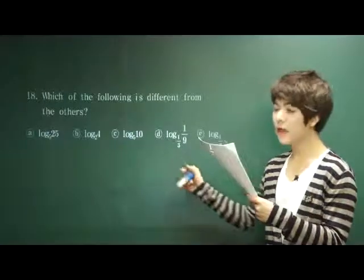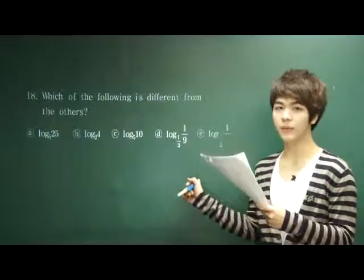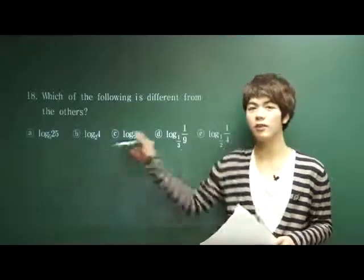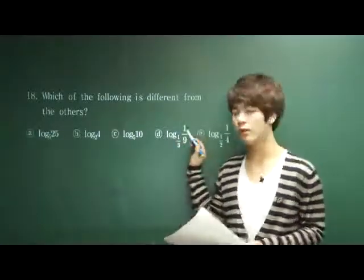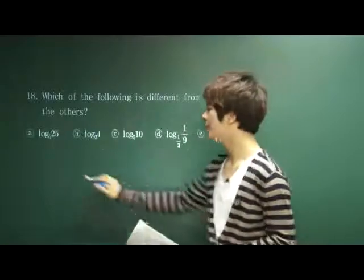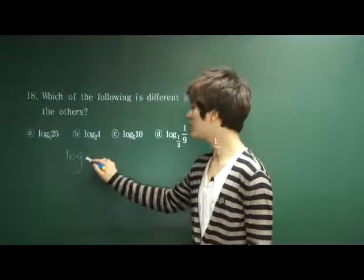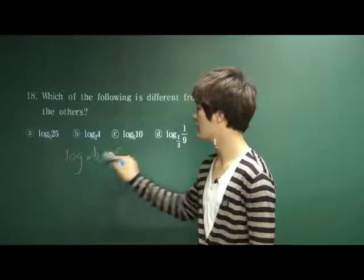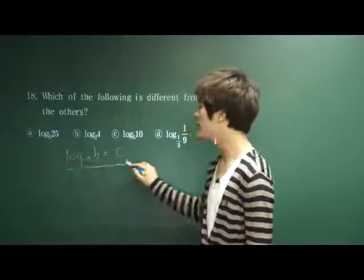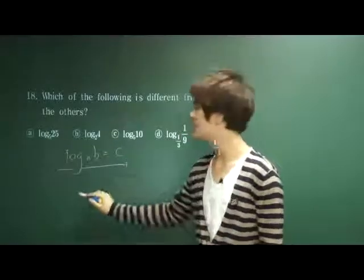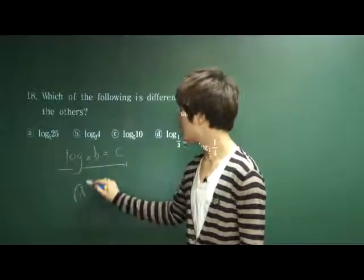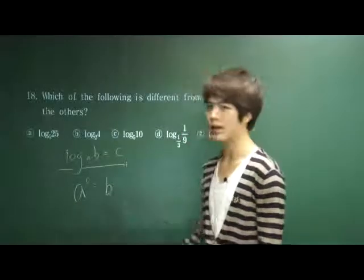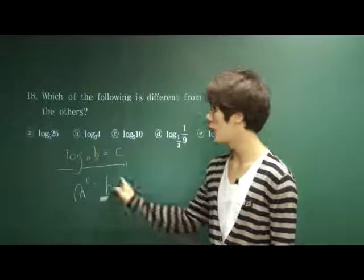Which of the following is different from the others? We are given a logarithm function. The definition of the log is: when we are given a form like this, a to the c power is equal to b.